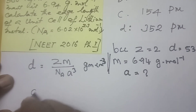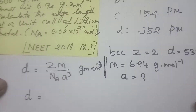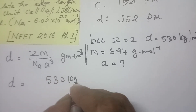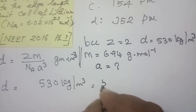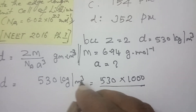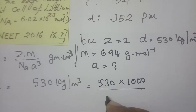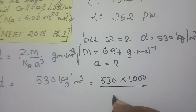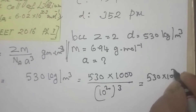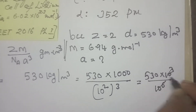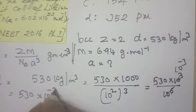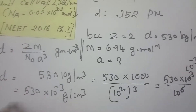Let us substitute one by one. Density is given as 530 kilogram per meter cube — this is the first tricky part. We need to convert it. 530 kilogram per meter cube: kilogram to gram is ×10³, and meter to centimeter is ×10². So meter cube becomes ×10⁶. Therefore 530×10³ divided by 10⁶ gives 530×10⁻³ gram per centimeter cube. This is the first conversion done for substitution.